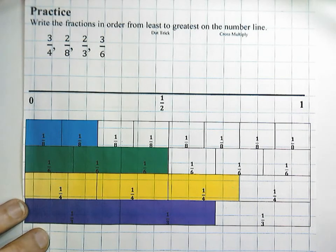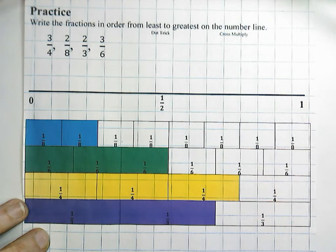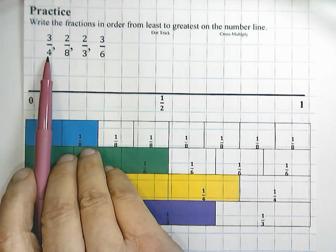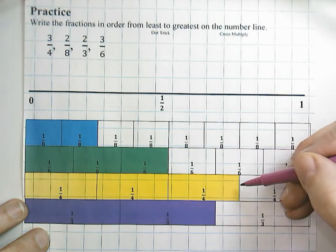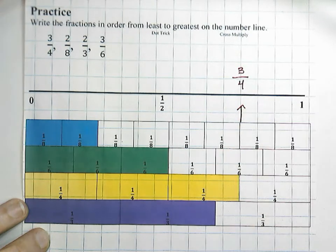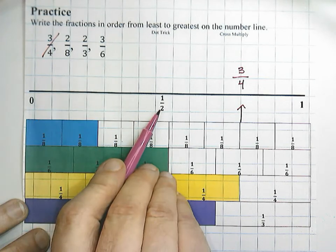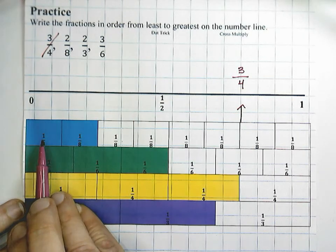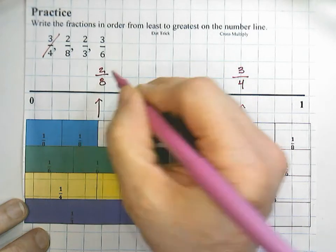Let's practice. Write the fractions in order from least to greatest on the number line. We're going to use our strategy of benchmark fractions. Three-fourths is greater than two-fourths — two-fourths is our equivalent fraction — so three-fourths goes here, roughly right here. Two-eighths is less than four-eighths. Remember that four-eighths is equivalent to half, so two-eighths is going to be here — that's one, two eighths — so two-eighths would go there.